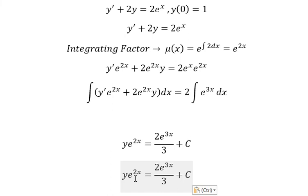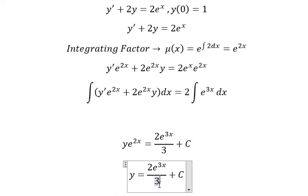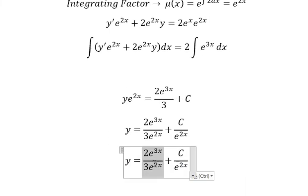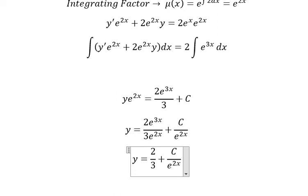We divide both sides by e to the power of 2x. So we simplify this and get e to the power of 3x minus 2x, which equals e to the power of x.